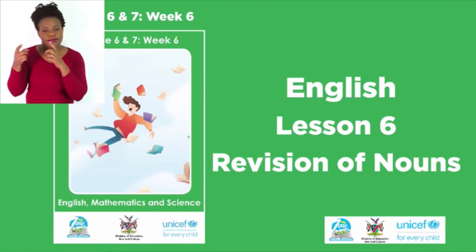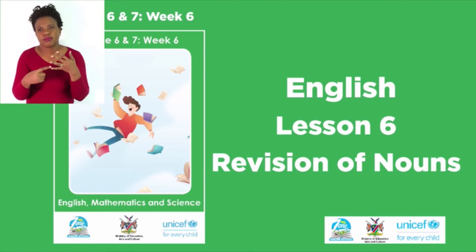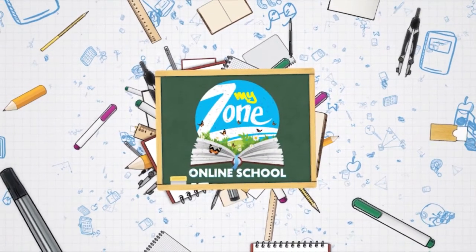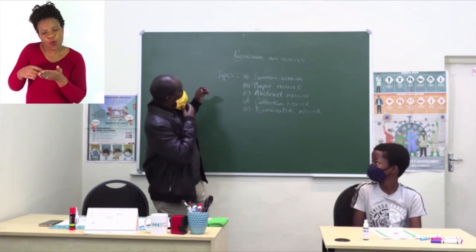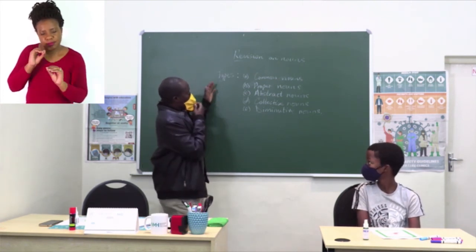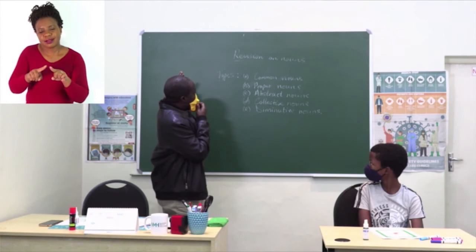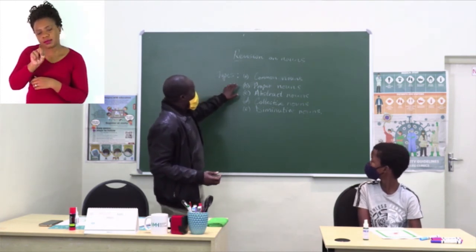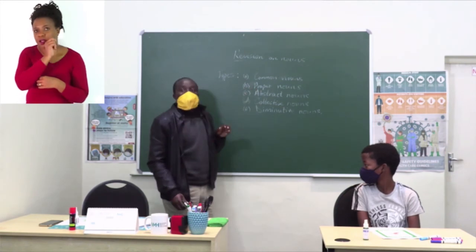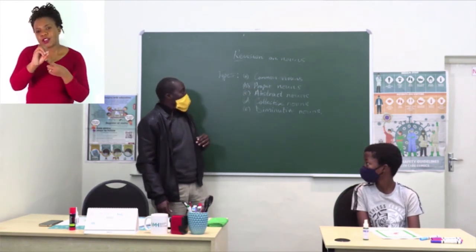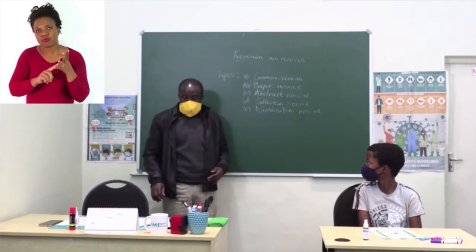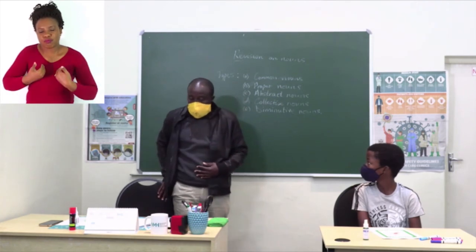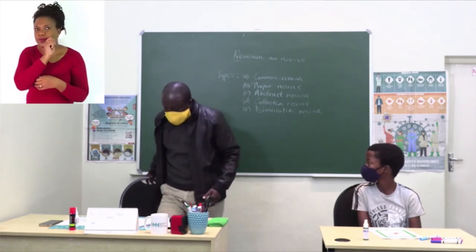Today's lesson is going to be a summation of our nouns. Over the past five lessons we have been looking at nouns, and we said there are five types: common nouns, proper nouns, abstract nouns, collective nouns, and diminutive nouns. Let us run through and see what these really are.